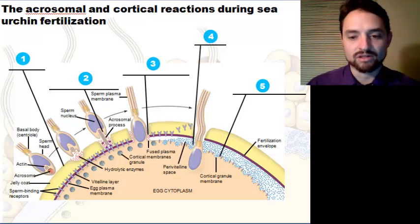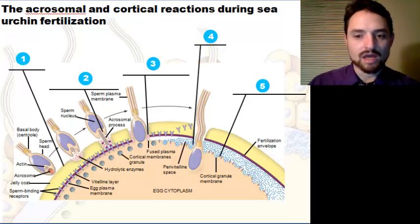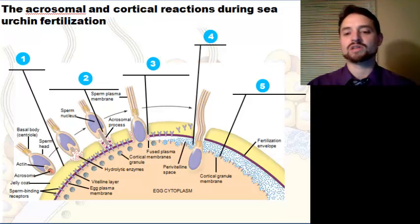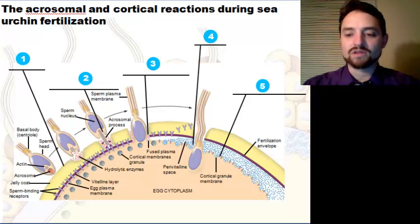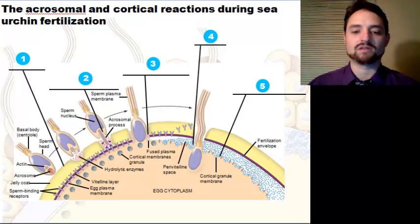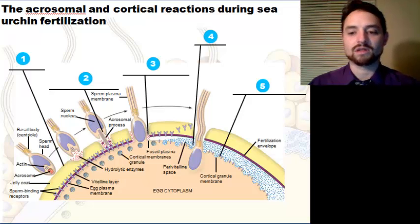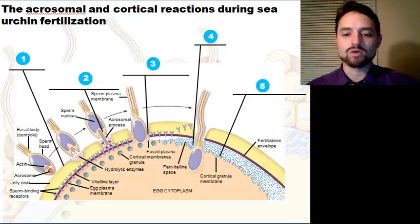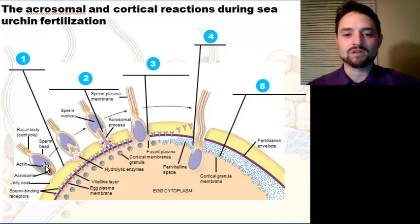The membrane becomes depolarized, resulting in a fast block to polyspermy. Step five is the cortical reaction: fusion of the gamete membranes triggers an increase in calcium in the egg cytosol, causing cortical granules to fuse with the plasma membrane and discharge their contents. This leads to swelling of the pre-vitelline space, hardening the vitelline layer and clipping sperm-binding receptors — forming the fertilization envelope, a slow block to polyspermy.